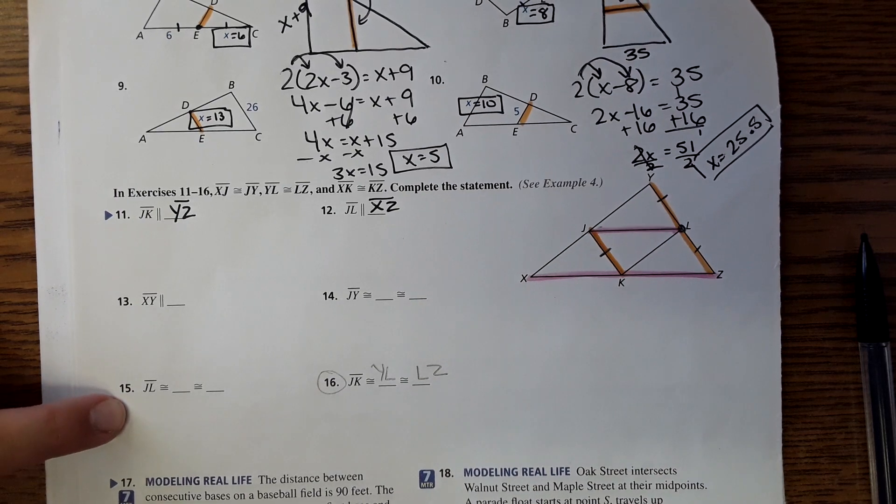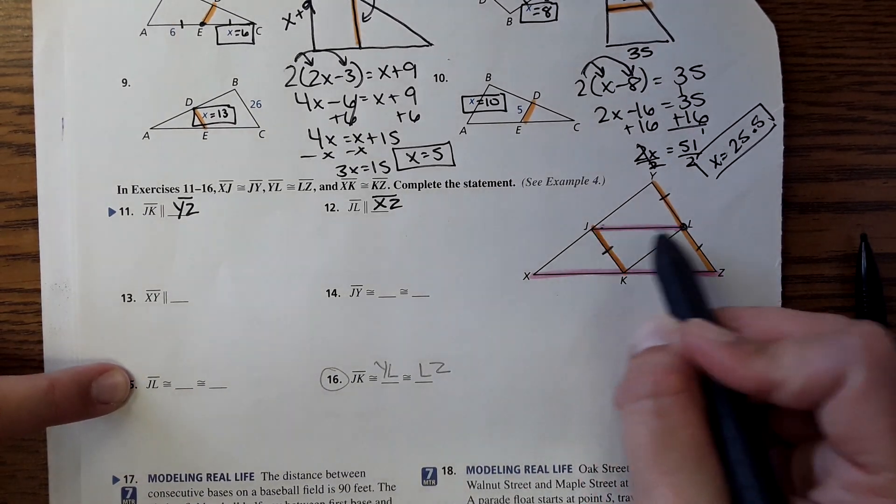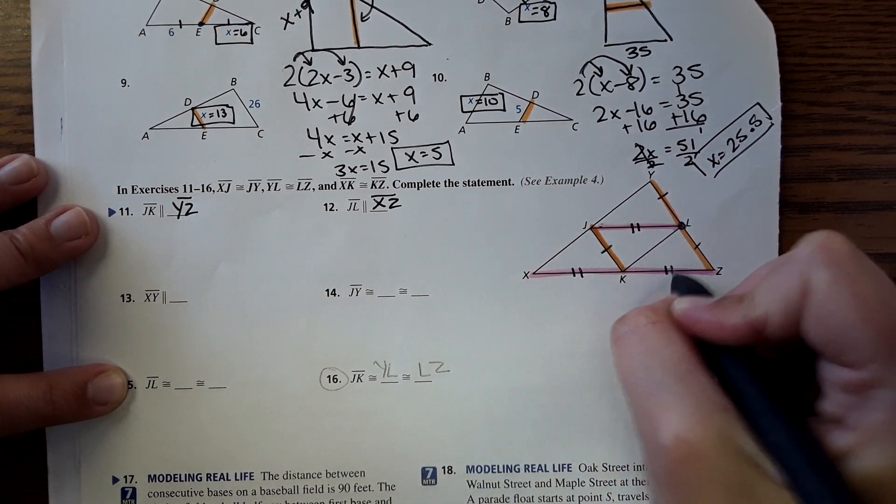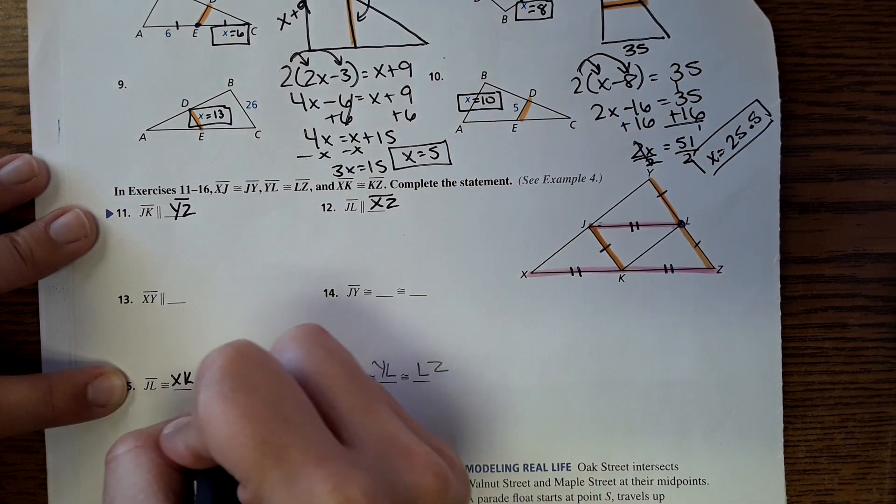And then 15 asks about what's congruent to JL. Well this would be equal to this which would be equal to this, so XK and KZ.